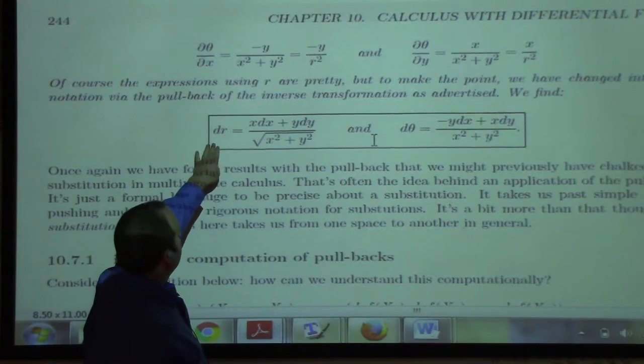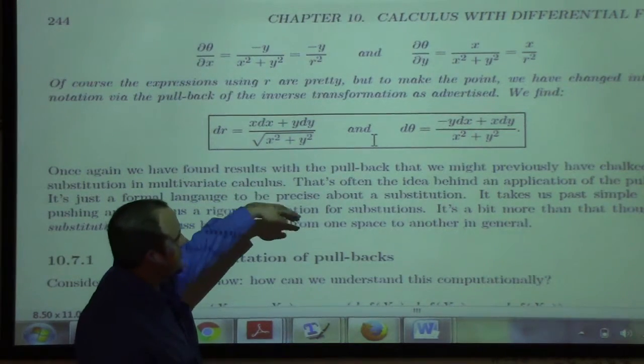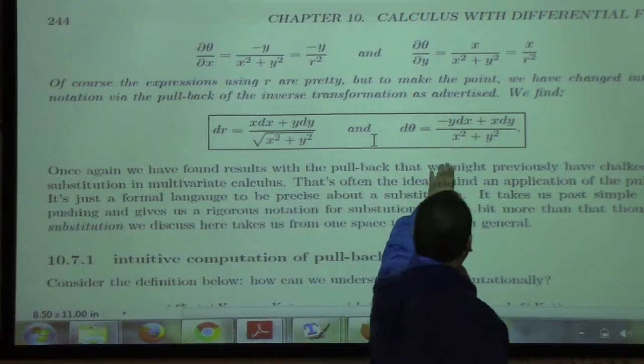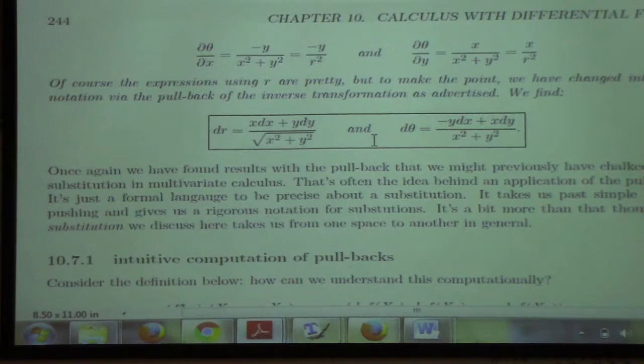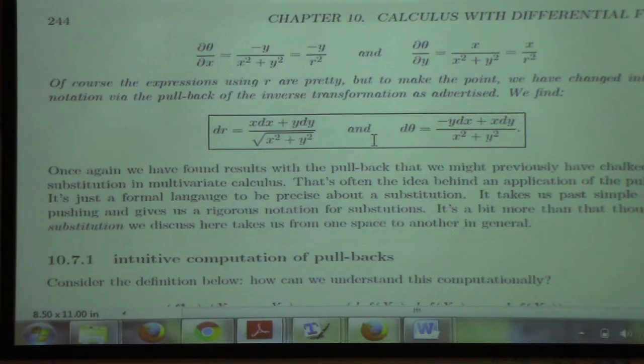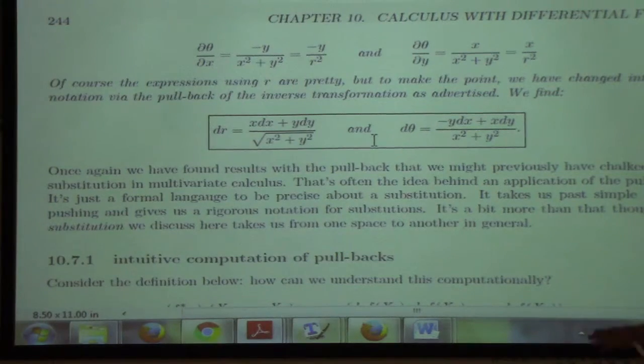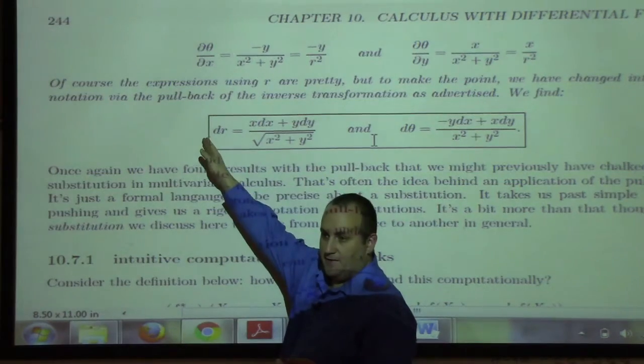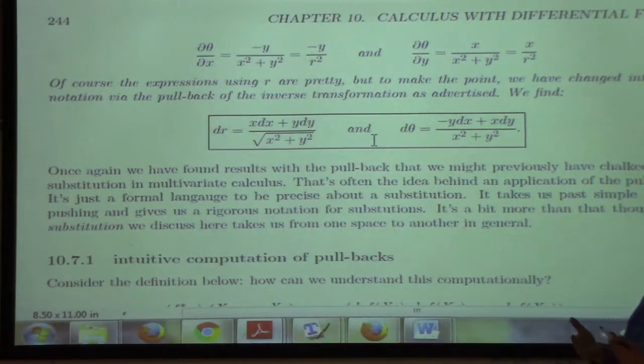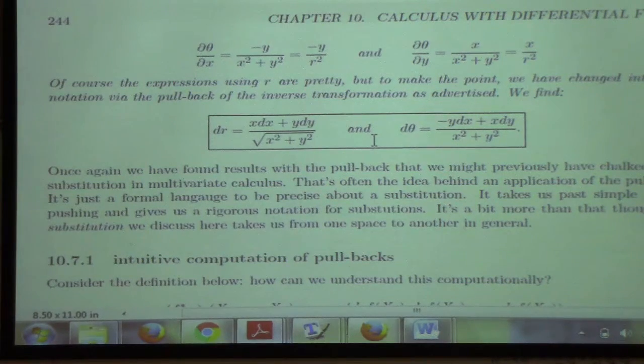So dr is x dx plus y dy over the square root of x squared plus y squared. d theta is minus y dx plus x dy over x squared plus y squared. You could actually see this as being dr pulls back to x dx plus y dy over x squared plus y squared. You could think d theta pulls back to minus y dx plus x dy over x squared plus y squared. You could actually view these as being pullbacks of dr and d theta from r theta space to x, y space. That's what I'm trying to work through. I'm getting lost in my own notation at the moment, which is sad but true.